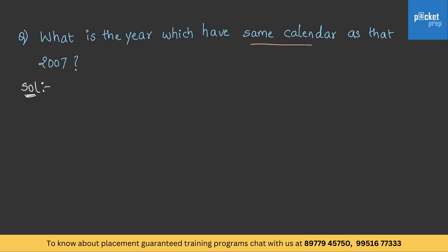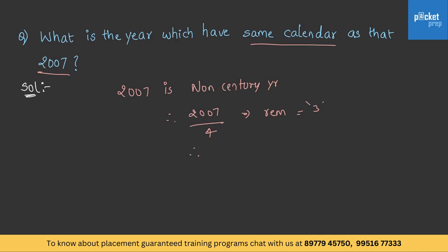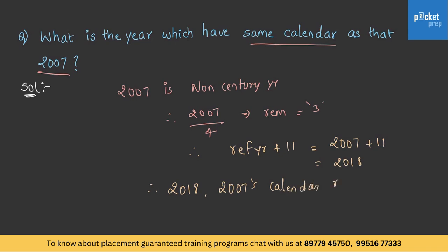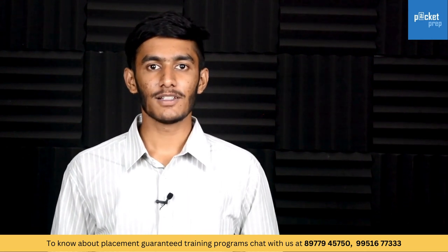Example: When does the 2007 calendar repeat? 2007 is a non-century year. 2007 ÷ 4 gives remainder 3. Since remainder is 3, add 11 years: 2007 + 11 = 2018. Therefore the 2007 calendar repeats in 2018. For century years, use the same approach but divide by 400 instead of 4. Hope you are clear with this concept — practice well, all the best!